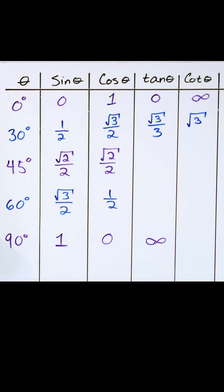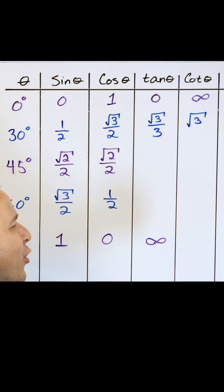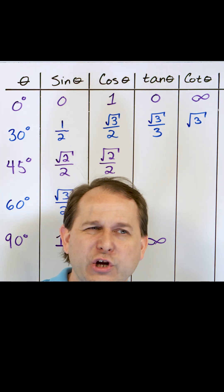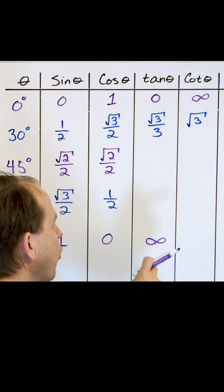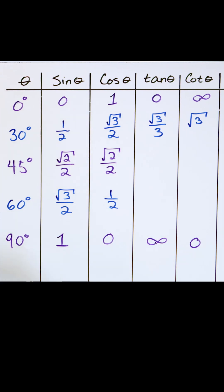The cotangent, remember, the cotangent is one over the tangent. So it's one over this. What is one over infinity? One over infinity is like one over an enormous number. So one over infinity is going to basically be equal to zero. So the cotangent of 90 degrees is equal to zero.